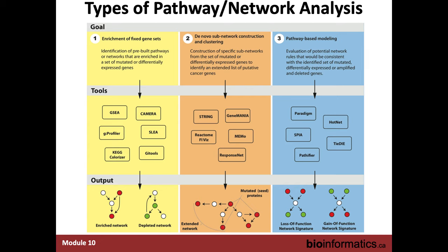The first type of pathway network analysis is enrichment of fixed gene sets. Fixed gene sets are groups of genes previously annotated to carry out a particular function. We perform an enrichment test to ask if our experimentally defined list is somehow characteristic of these gene lists. This is perhaps the most widely used and easiest method to apply because it has fairly few assumptions.